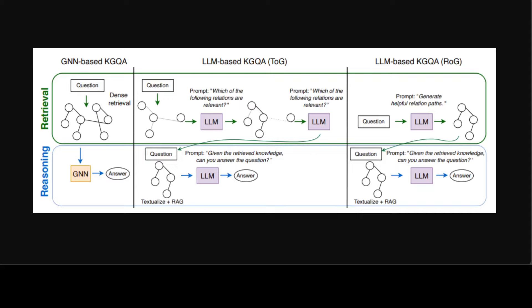Then, the shortest paths in the knowledge graph that connect question entities and answer candidates are extracted to represent KG reasoning paths. The extracted paths are verbalized and given as input for LLM reasoning with RAG.